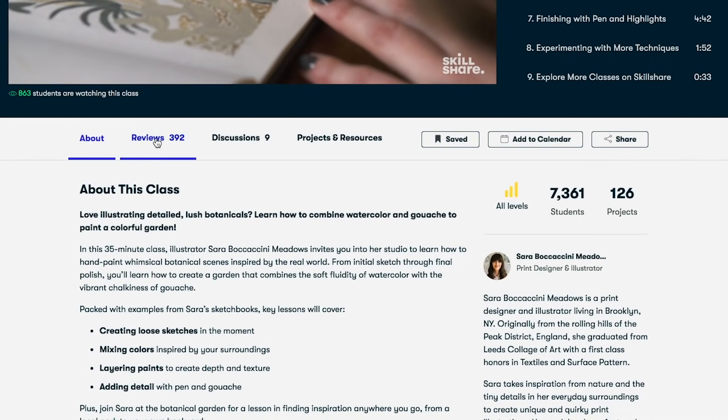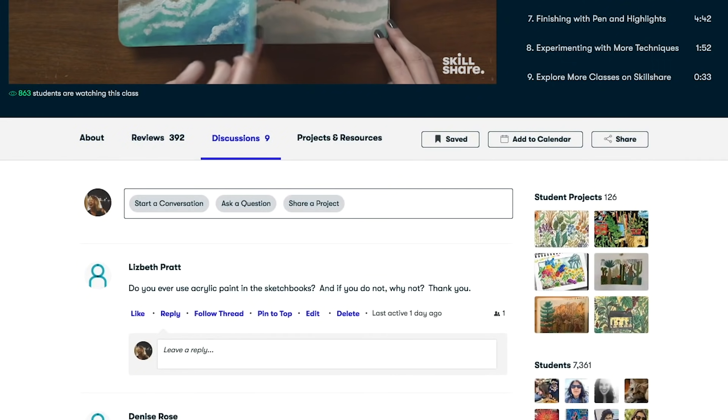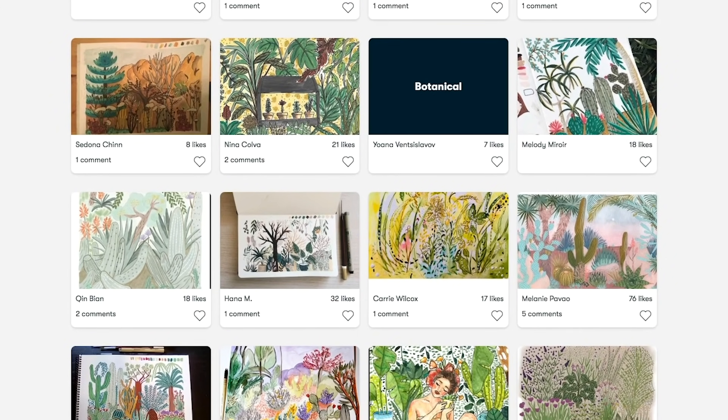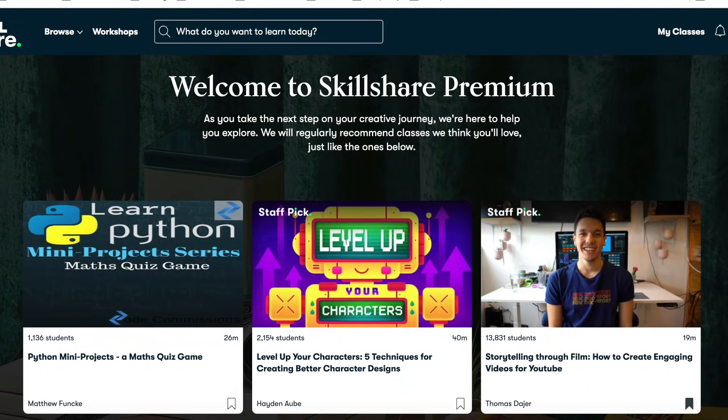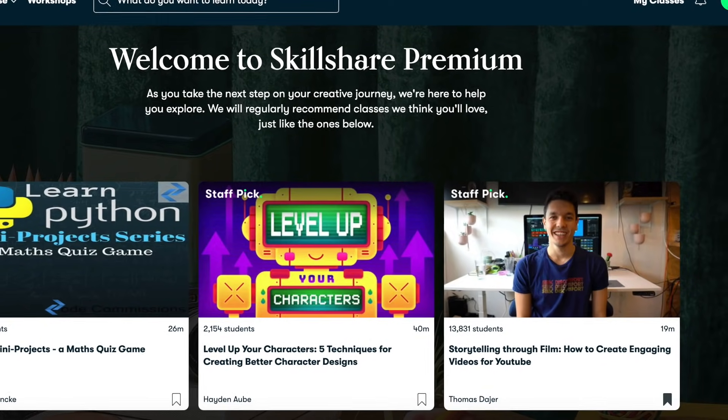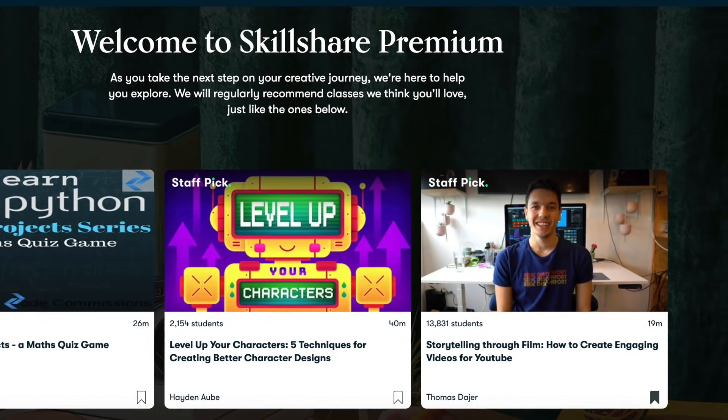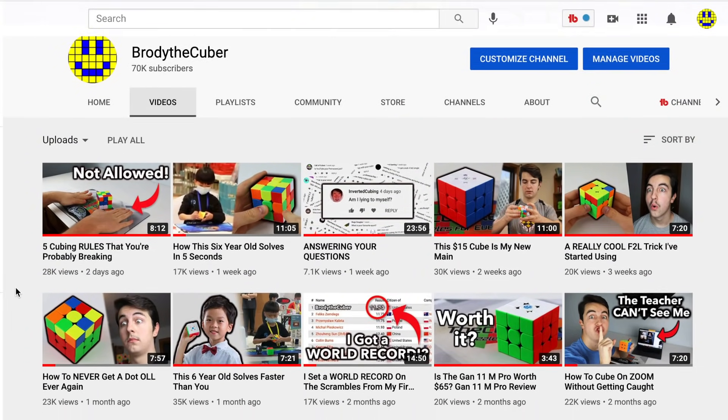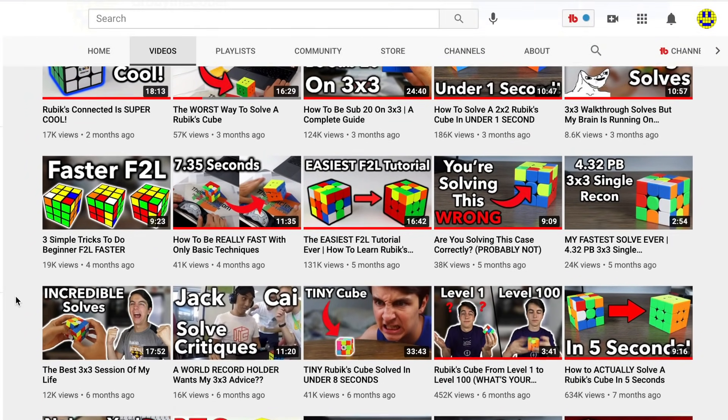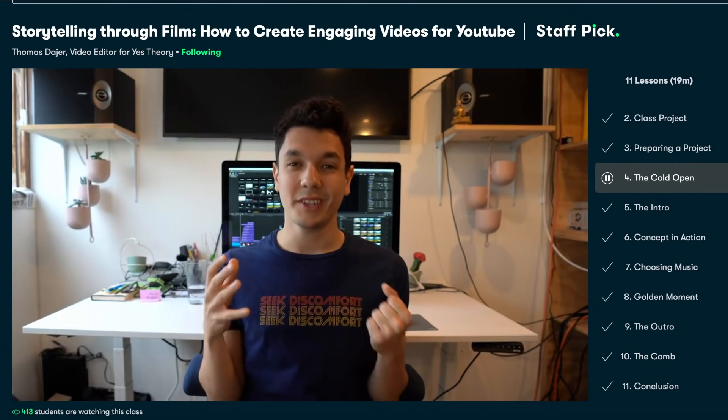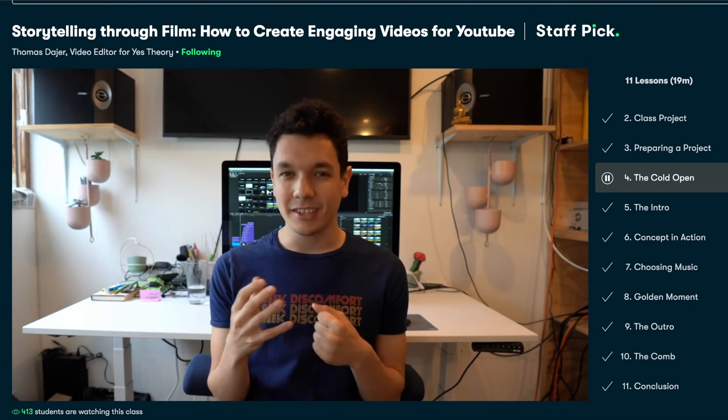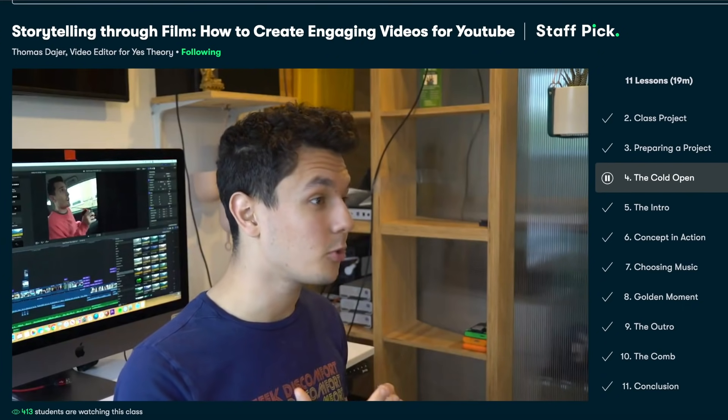Each course also has places to discuss what you're learning with other people taking the same course, and even places to upload your own projects to show off what you've learned. When I first went onto the Skillshare website, the first thing that caught my eye was a course called Storytelling Through Film, How to Create Engaging Videos for YouTube by Thomas Daher. The course was so well done and captivating that I watched all 11 parts all at once, and I feel like I learned a lot from it. As someone who makes a lot of videos, sometimes it can seem random which videos take off and which ones don't. But Thomas does a great job of breaking down the art of video making to a science in a way that makes the magic of a really captivating video feel possible to replicate. I can't wait to apply what I learned.